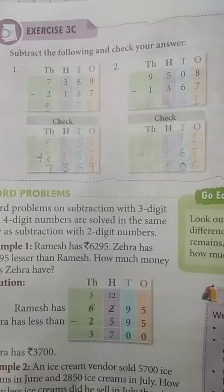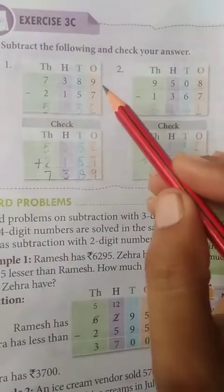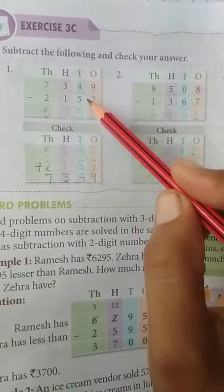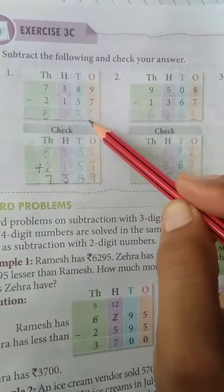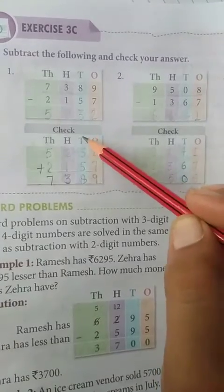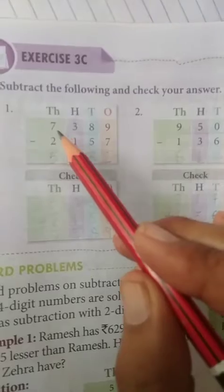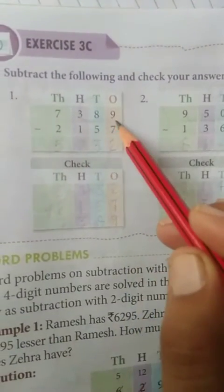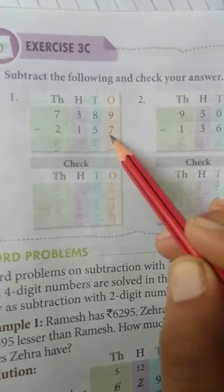Subtract the following and check your answer. इस question में हमें क्या करना है? पहले जो यह numbers है, नहीं subtract करना है, और हमें अपना answer चेक करना है. This is correct or not? First question, 7,389 minus 2,157.